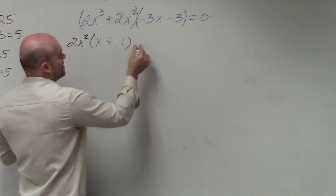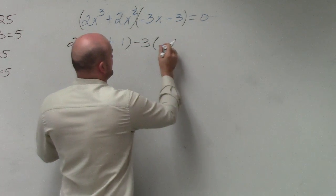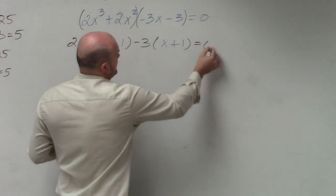Here you can see that I can factor out a negative 3. When I factor out a negative 3, I'm left with x plus 1 equals 0.